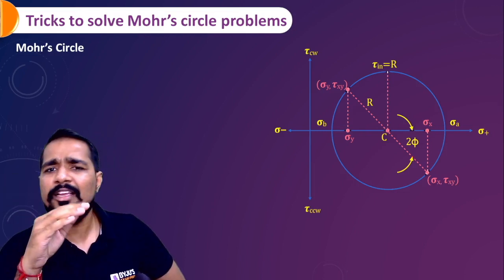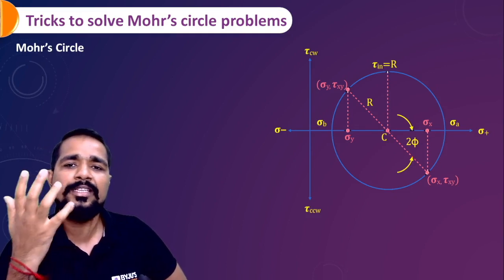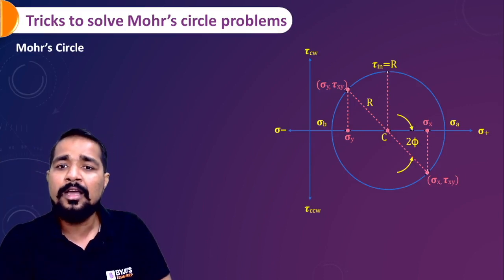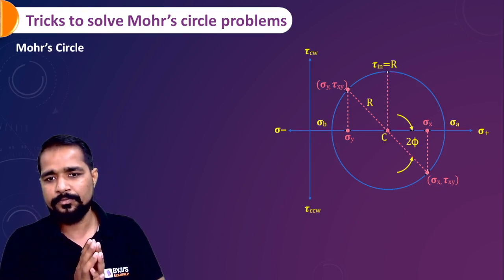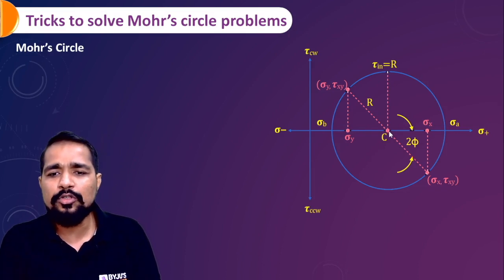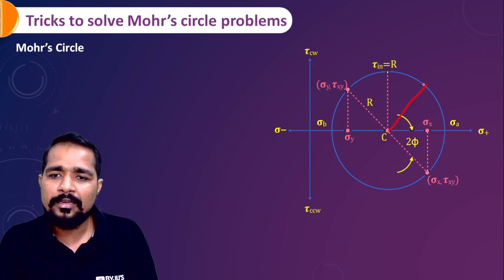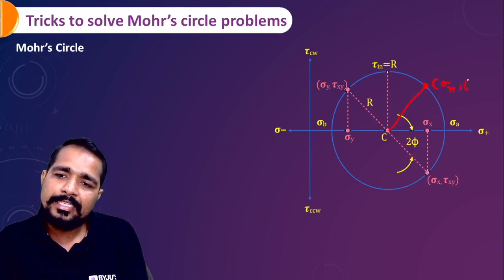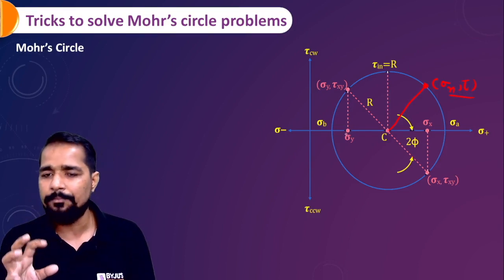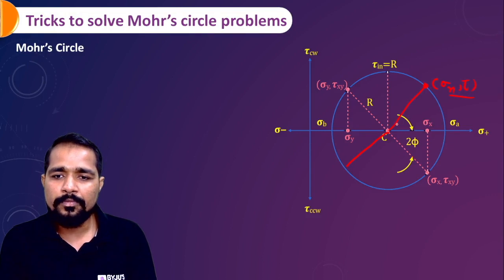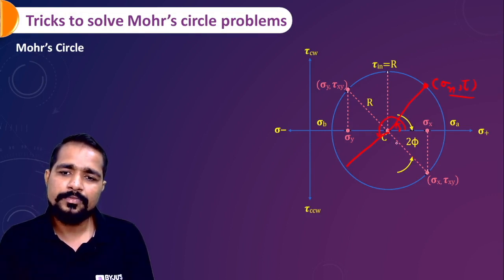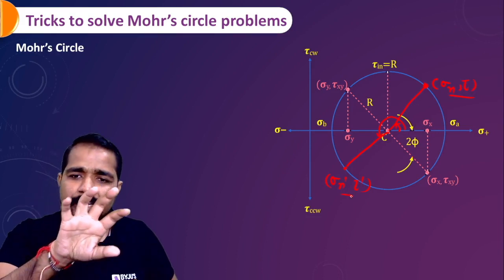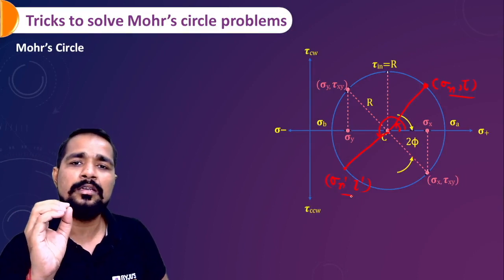The general procedure to draw a Mohr's Circle is: first locate σ_x, then σ_y, then τ_xy, then find the center of the circle, and draw the circle. At any particular plane you draw a line, and the locus on the circumference gives the normal stress and shear stress at that plane. But instead of this conventional method, let's focus on the geometry.